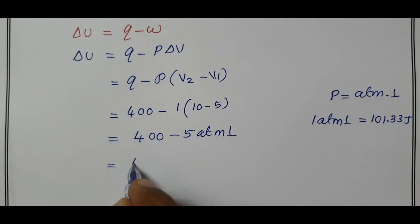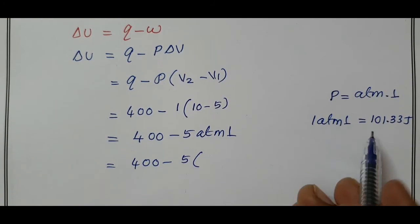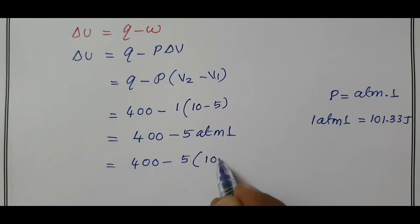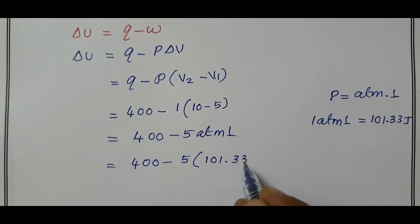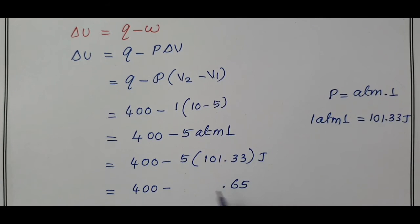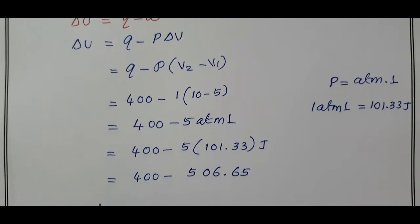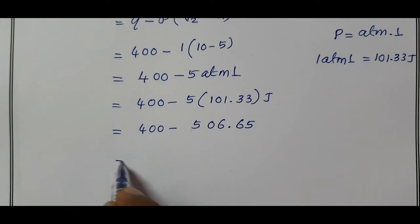400 minus 5 into 1 atm liter equal to 101.33 Joules equals 400 minus 5 into 101.33. The calculation gives 400 minus 506.65. When we subtract these two quantities, we will get the answer.